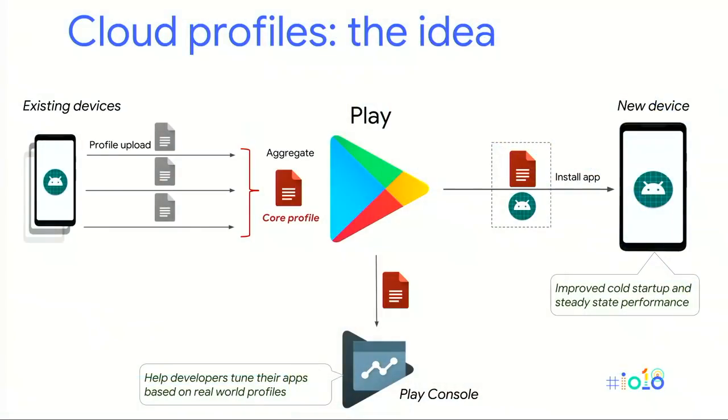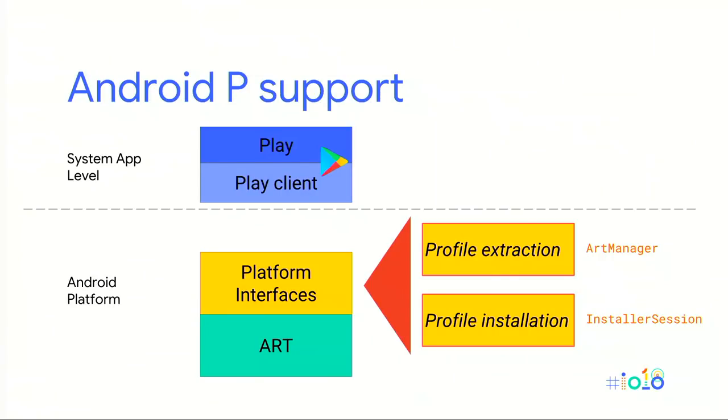Having profiles in the cloud offers more opportunities than just directly influencing app performance. The core profiles offer valuable data for developers to act upon and tune their own applications. We're going to explore how we can share this data later. To deliver this, we need support from both the Android platform and Play. In Android P, we added new interfaces to extract the profile and bootstrap information from the cloud. The functionality is available to all system-level apps that acquire the necessary permissions, and in our case, Play is the consumer.